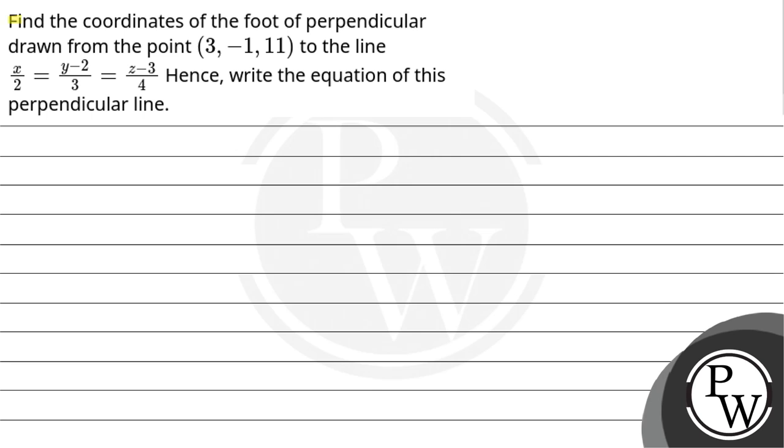Hello, let's read the question. Find the coordinates of the foot of perpendicular drawn from the point (3, -1, 11) to the line x/2 = (y-2)/3 = (z-3)/4. Hence, write the equation of this perpendicular line.